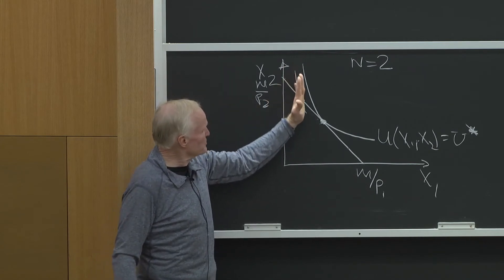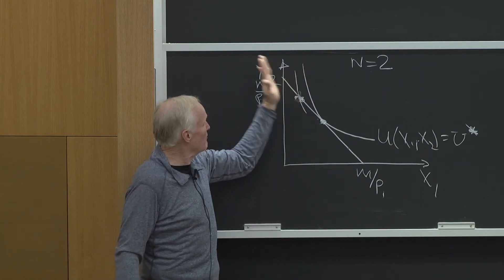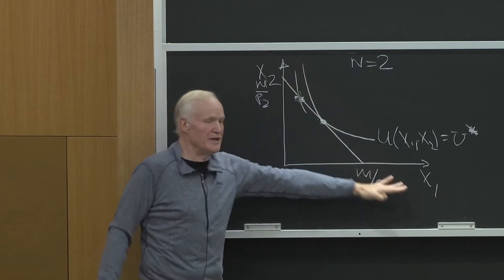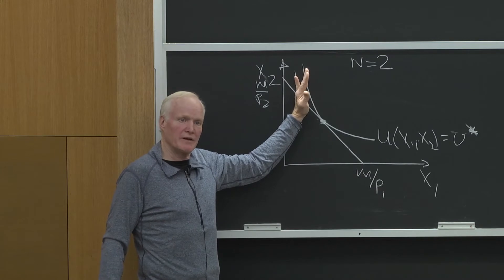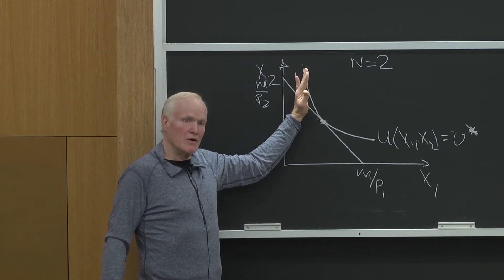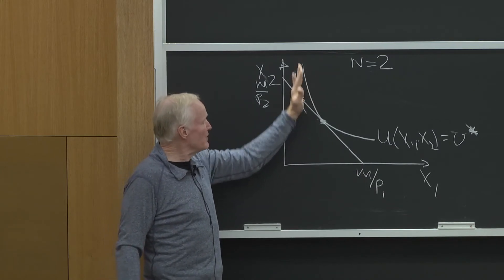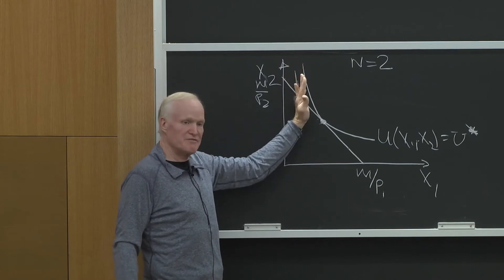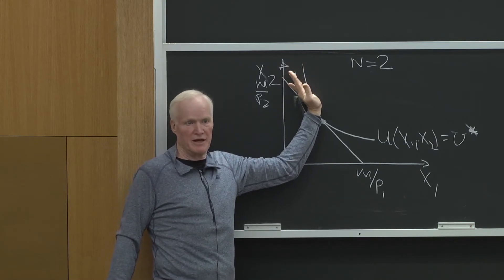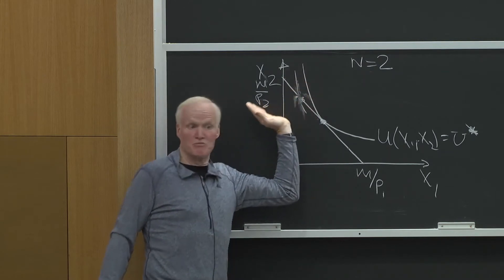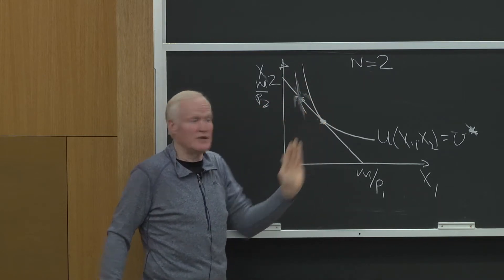The slope of this indifference curve measures how much of this good I'm willing to give up to get more of good one. At this point, what's wrong with this? You can trade more of X2 for X1. Right. My value of X1, which is the slope of this indifference curve, exceeds my cost of good one, which is the slope of this budget line. Therefore, I should get more of one. I should move to the right.